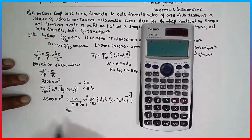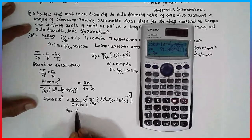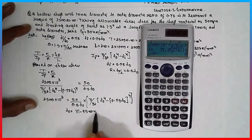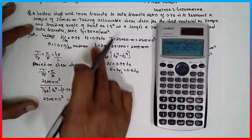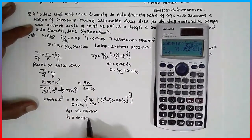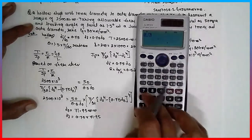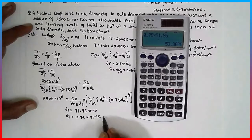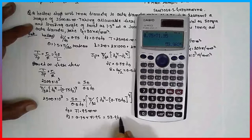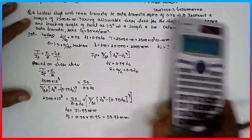Solving the equation, you obtain the Do value. The outer diameter value is 71.95 mm. Now the inner diameter will be 0.75 × 71.95, which gives 53.96 mm. So based on shear stress: outer diameter = 71.95 mm, inner diameter = 53.96 mm.